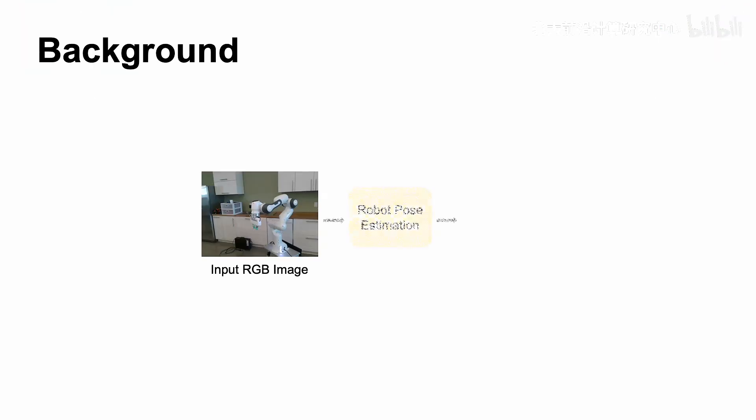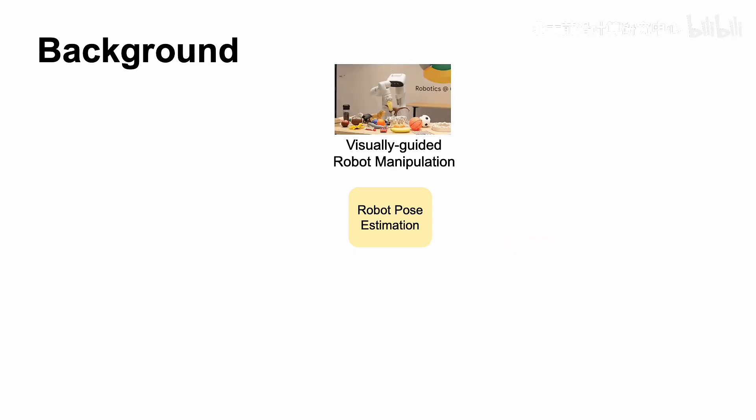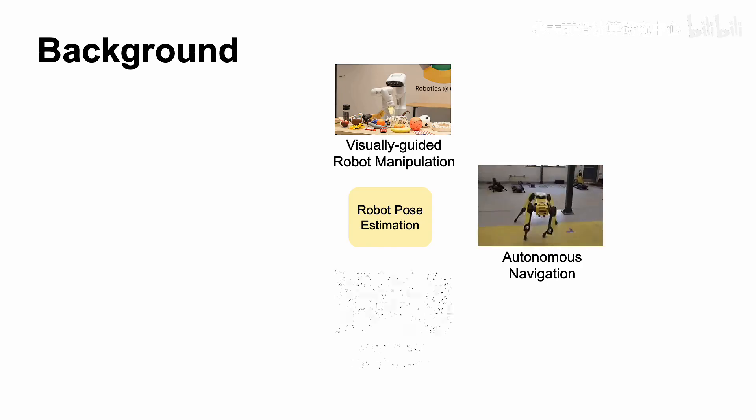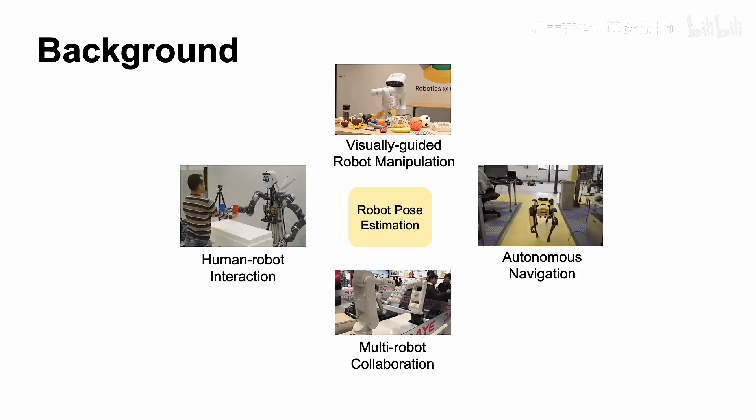Estimating camera-to-robot pose from RGB images is a crucial problem in computer vision and robotics. It paves the way for a variety of applications, such as visually guided robot manipulation, autonomous navigation, multi-robot collaboration, and human-robot interaction.